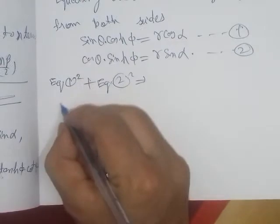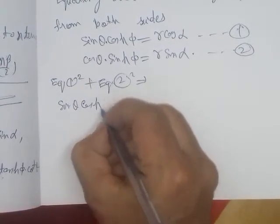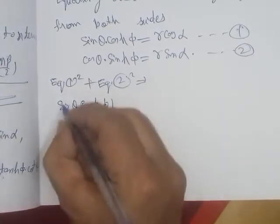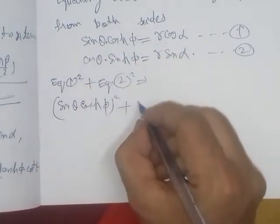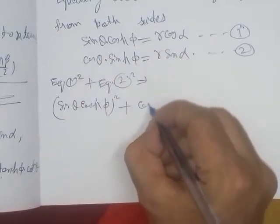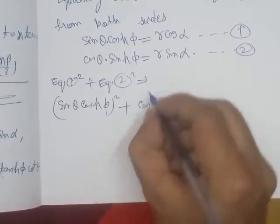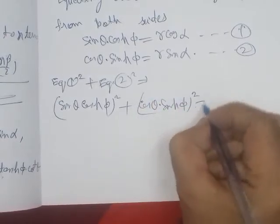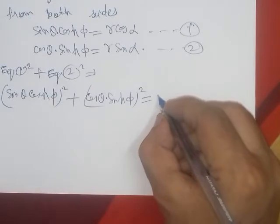Squaring equation (1): sin²θ·cosh²φ. Squaring equation (2): cos²θ·sinh²φ. Adding the left-hand sides gives sin²θ·cosh²φ + cos²θ·sinh²φ, and the right-hand side gives r²·cos²α + r²·sin²α = r².